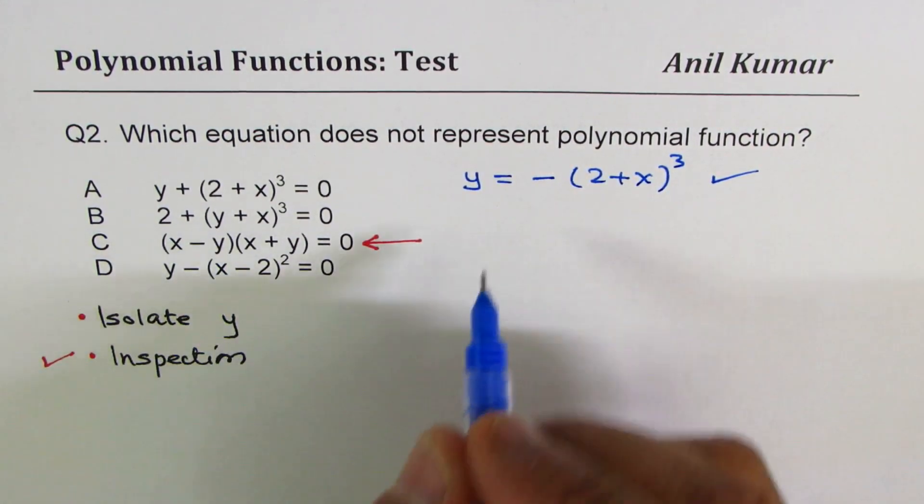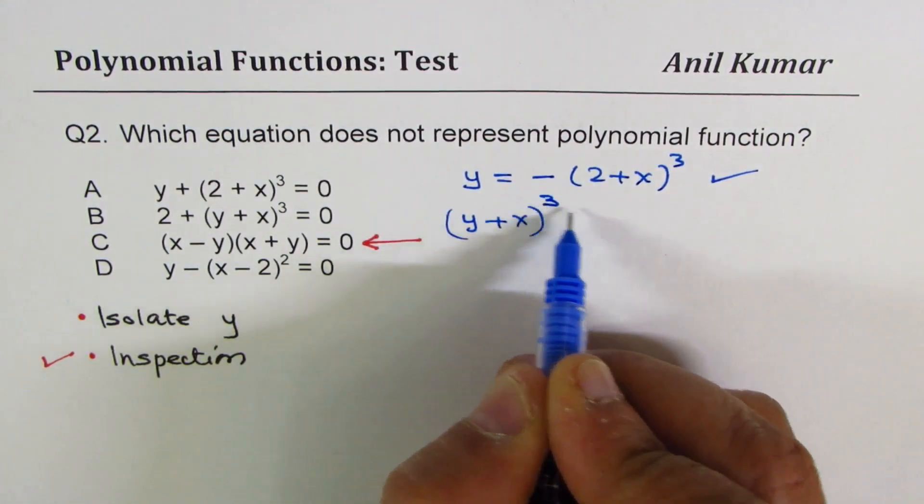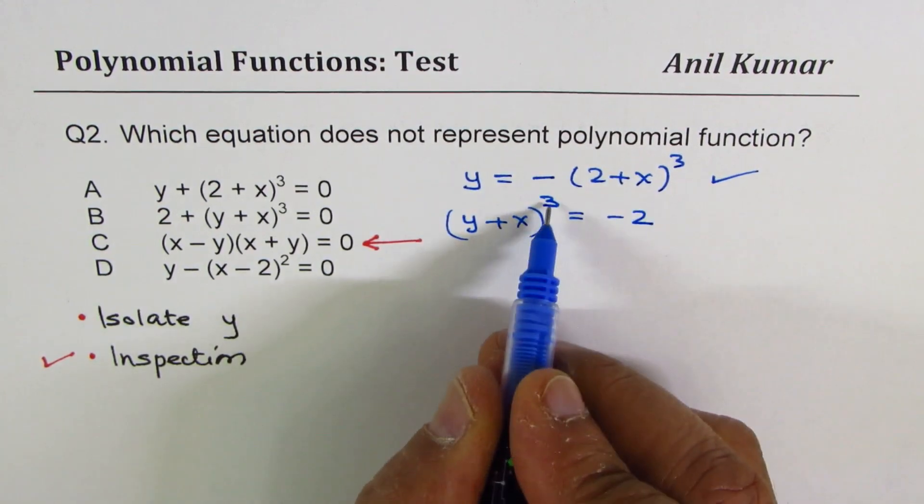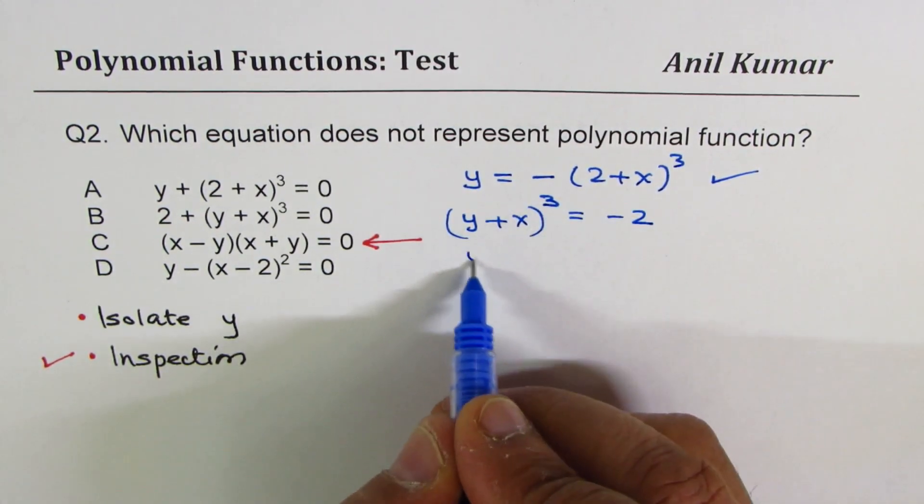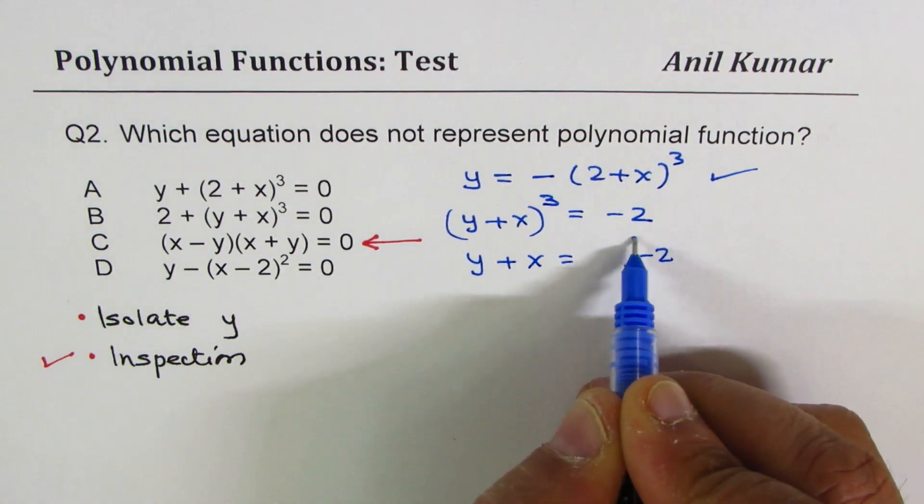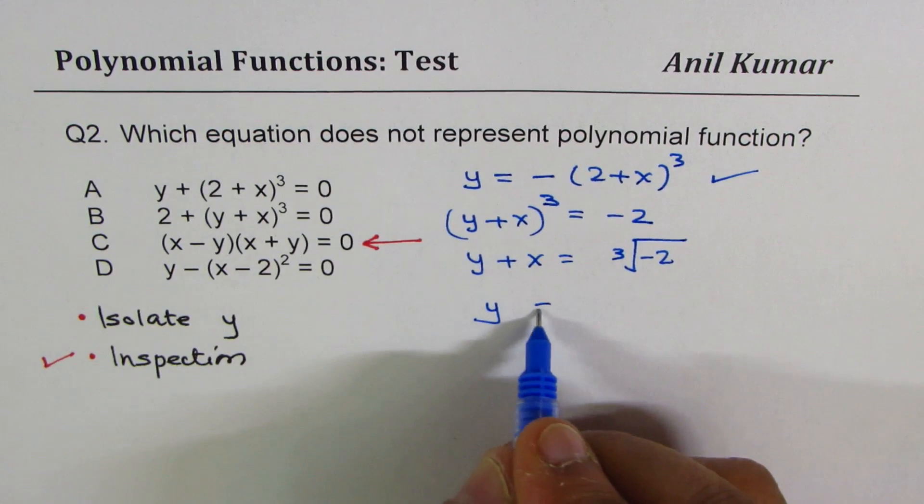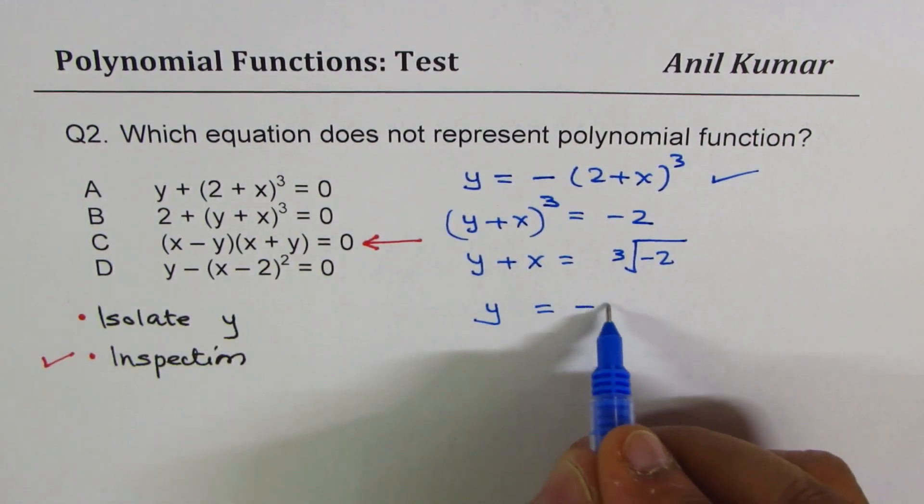The other one here is, if I isolate, we get y plus x whole cube equals to minus 2. Now cube root, that means y plus x equals to cube root of minus 2.